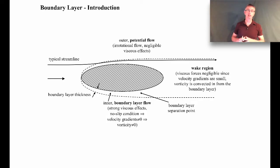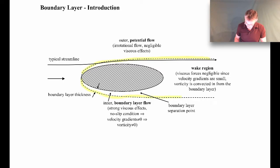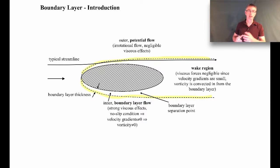It was Prandtl who came up with this idea, and it's relatively recent. Looking at the schematic, you can see flow going from left to right over an elliptical shape. There's a dashed line — highlighted in yellow — which marks the boundary layer region. Outside of that is a region known as the outer potential flow, which is irrotational. Most importantly for this course, viscous effects are negligible out in this outer flow — the stresses τ = μ du/dy are negligibly small, so the outer flow can be considered inviscid.